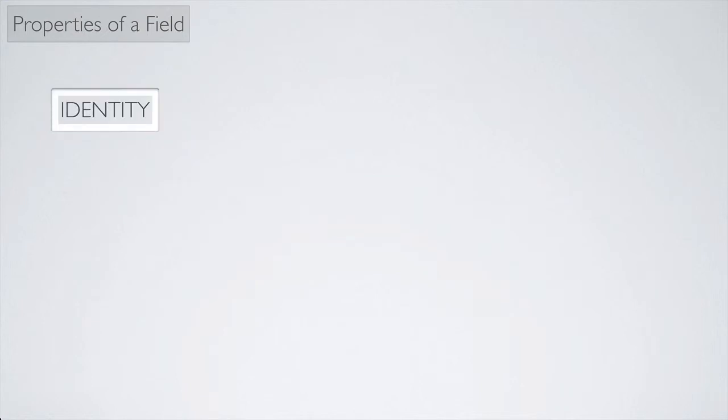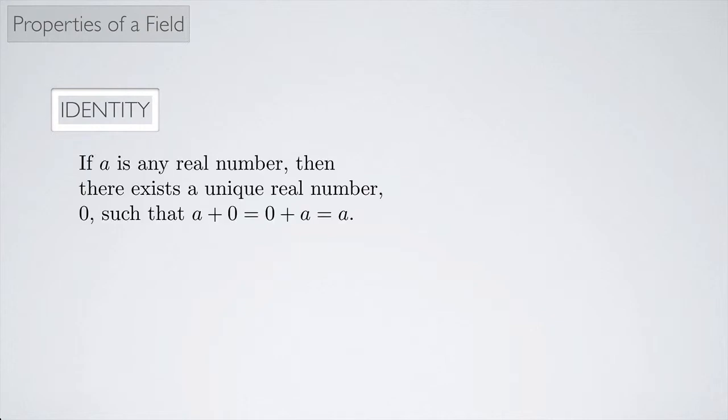There's something called an identity. And this is a member of the set of real numbers. And we have two kinds of identities. We have an additive identity and a multiplicative identity. So if A is any real number, then there exists a unique real number, which we call 0, such that A plus 0 equals 0 plus A, and that gives you back A. In other words, 3 plus 0, that's the same thing as 0 plus 3, which gives you back 3. The identity is something that kind of gives you back what you had. So another example might be negative 12 plus 0 equals 0 plus negative 12, and that gives you back negative 12.